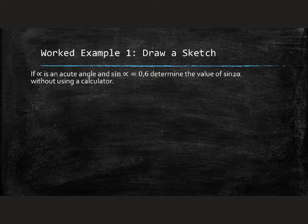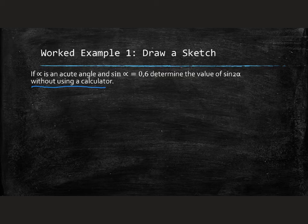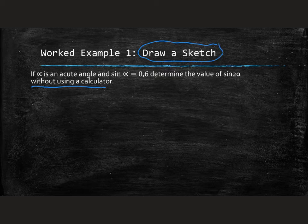So here's a worked example. If α is an acute angle and sin of α is 0.6, determine the value of sin 2α without using a calculator. So a couple of things here. Without using a calculator probably means you have to either make a drawing or use our special triangles. Well, we know it's going to be a drawing from this example. So pause the video and try this question for yourself. What is sin of 2α?